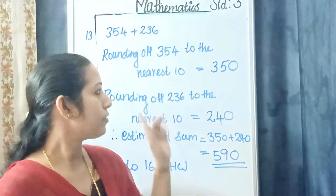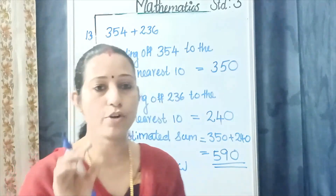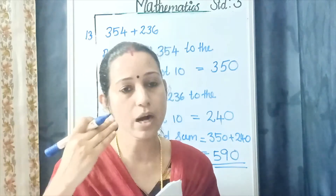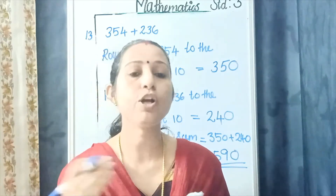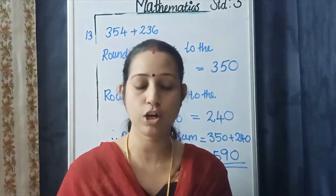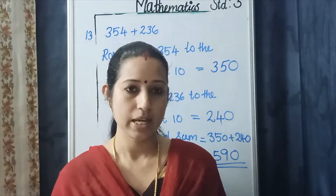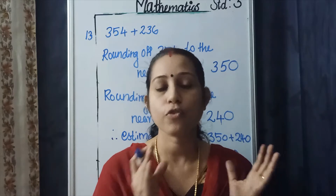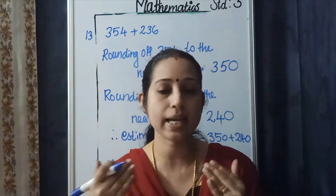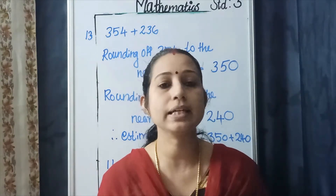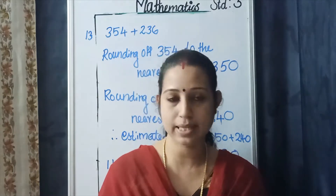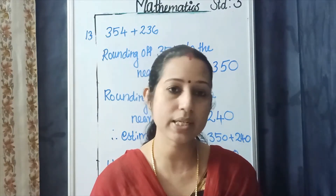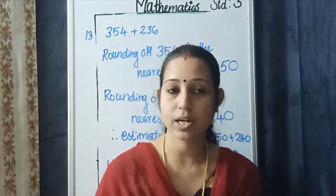First, round the first number nearest to 10. Then round the second number nearest to 10. Therefore find the estimated sum. That's it — very simple. We already learned how to round a number to the nearest 10. First number rounded to nearest 10, second number rounded to nearest 10, therefore the estimated sum. If anyone has any doubt in this type of question, we can clear that in the live class.